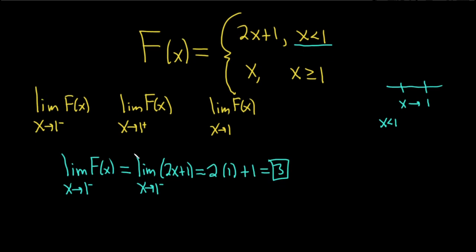Okay, let's find the other one. Now we're going to find the limit as x approaches 1 from the right. Because we're approaching from the right, the picture would look like this - here's 1, and here is x approaching from the right. That means x is bigger than 1, so we're going to use this piece here, x.